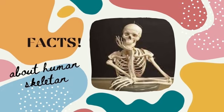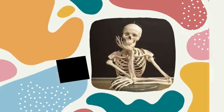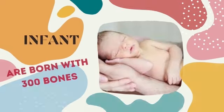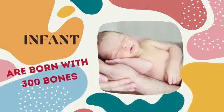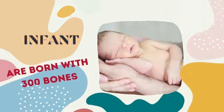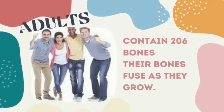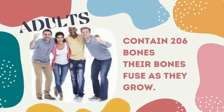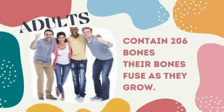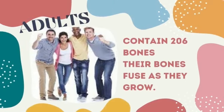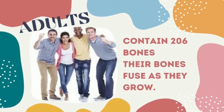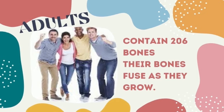Our skeletal system is made of bones. This is made from small bones, because in babies there are 300 of them. But as they grow bigger, these bones fuse together in the adult.